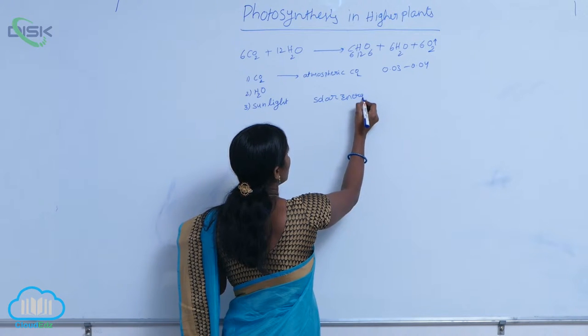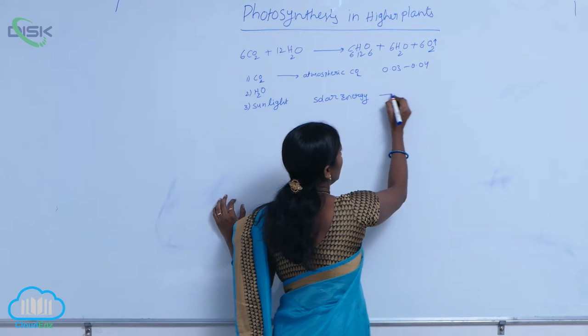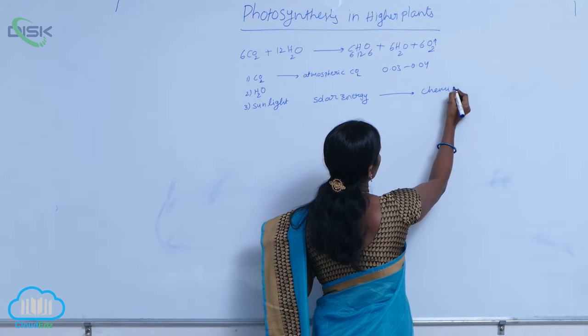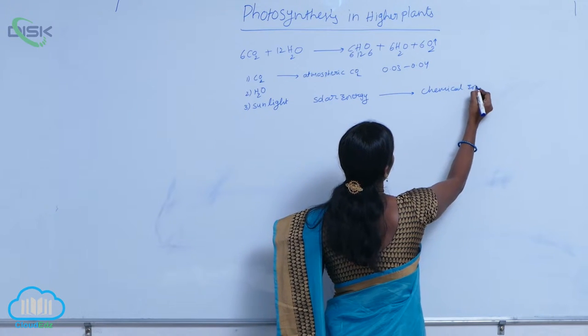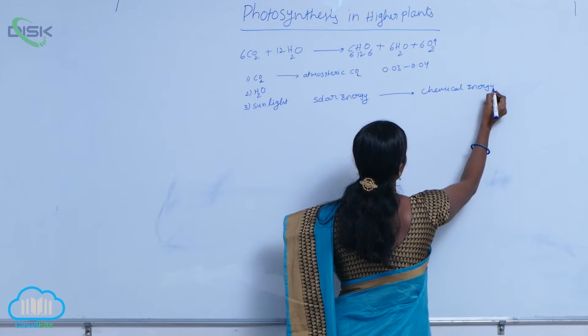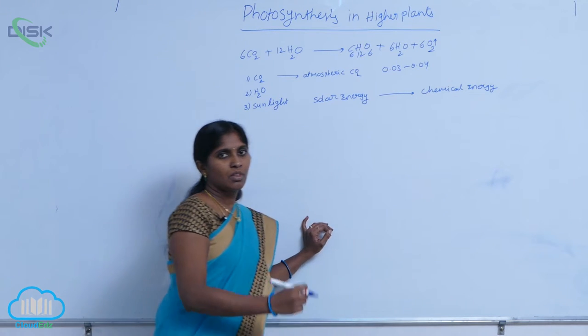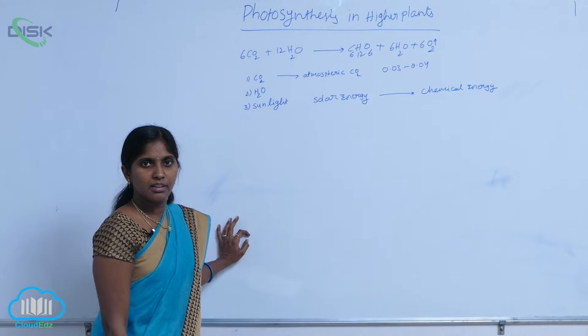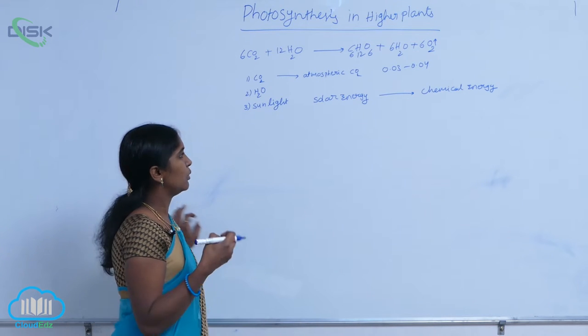The solar energy is converted into chemical energy, chemical energy that can be stored in carbohydrates.